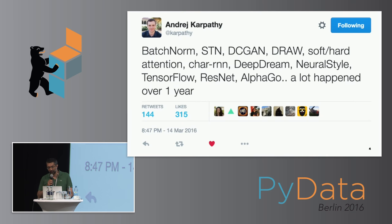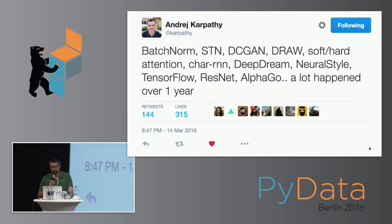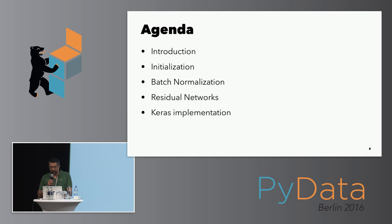The motivation for this talk came from a tweet. I can't cover all of those topics, but I wanted to talk about some of the major new things that are a bit more practical for deep learning — like batch normalization and residual networks — so you can start using them. Even if you're new to deep learning, I hope you'll get some intuition about how some of these things work.